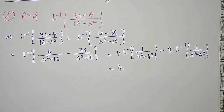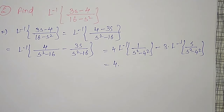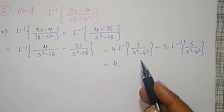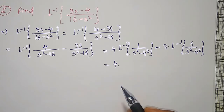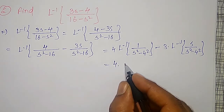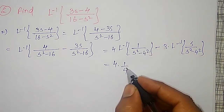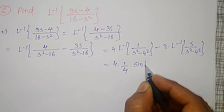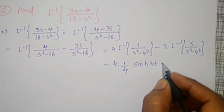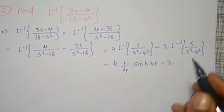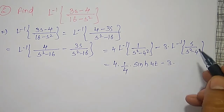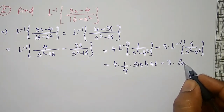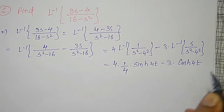Therefore, 4 times inverse Laplace transform of 1/(s² - a²) gives (1/a)sinh(at) — here a = 4 — so it is (1/4)sinh(4t). Minus 3 times inverse Laplace transform of s/(s² - a²), which gives cosh(4t). Since there is s in the numerator, the 1/4 factor does not come.